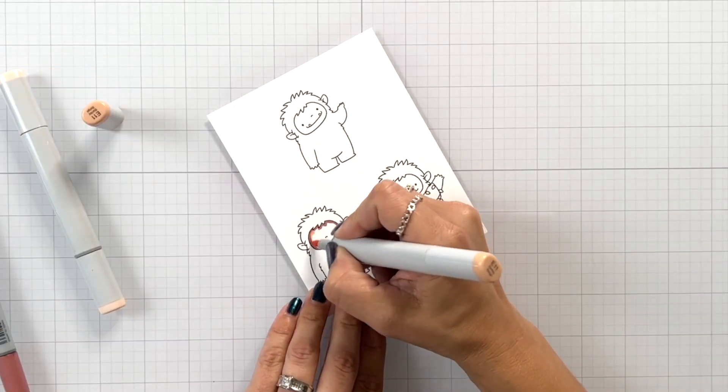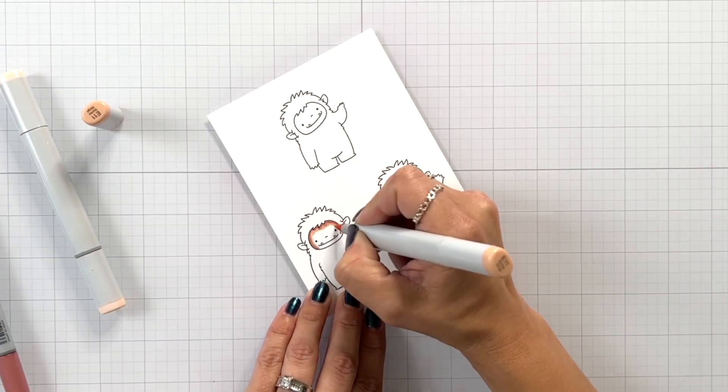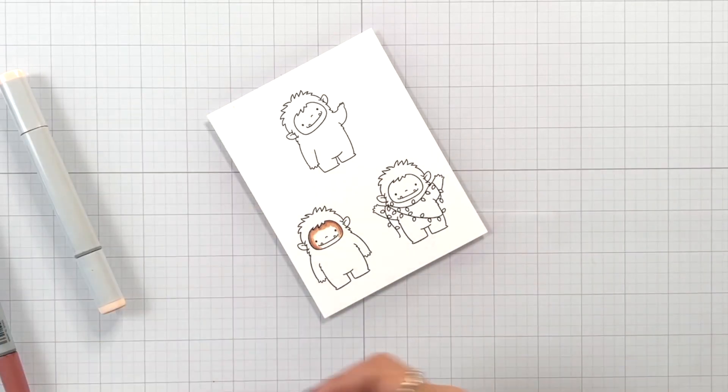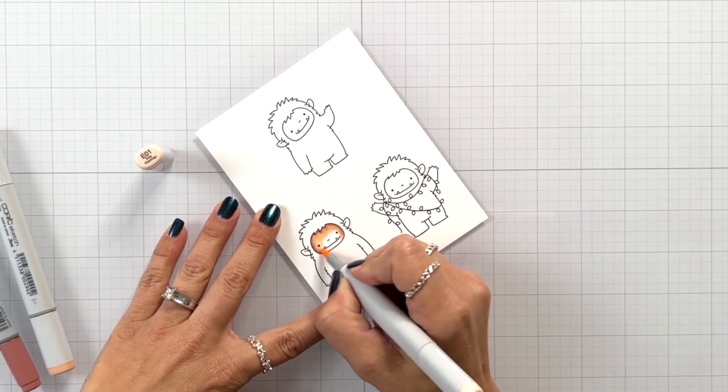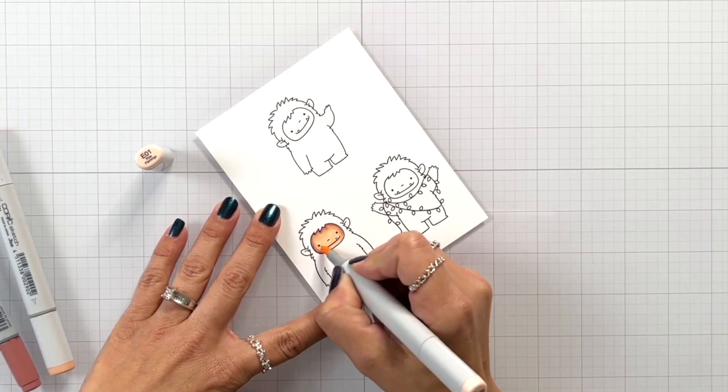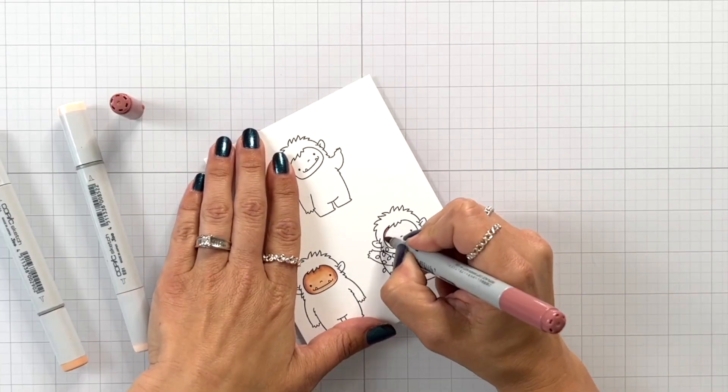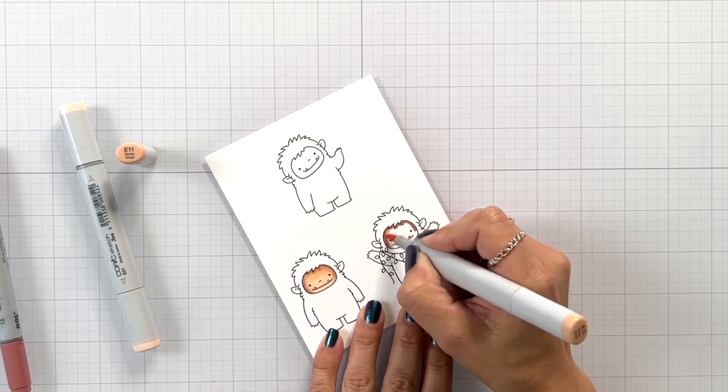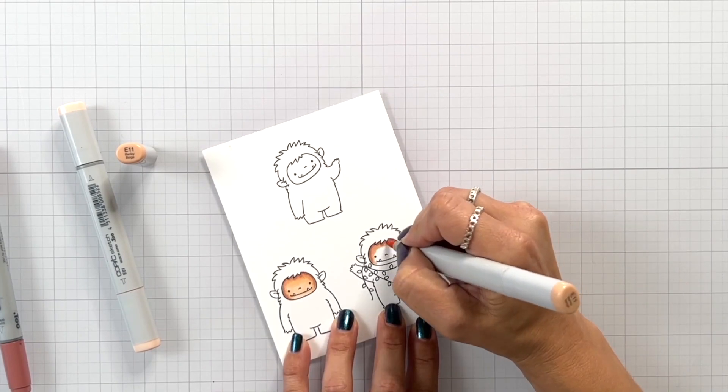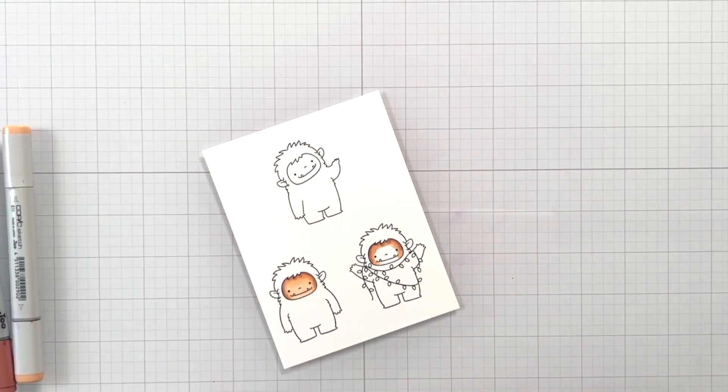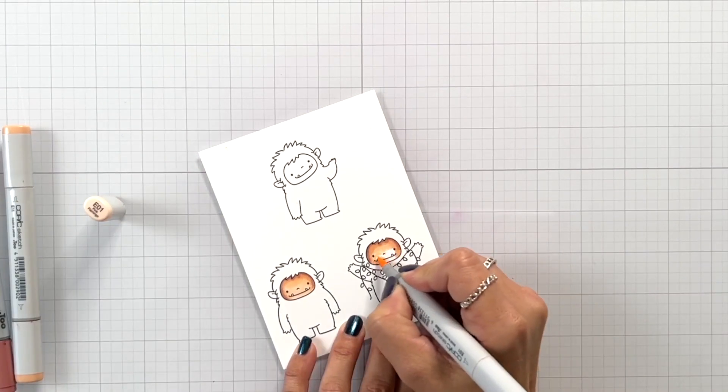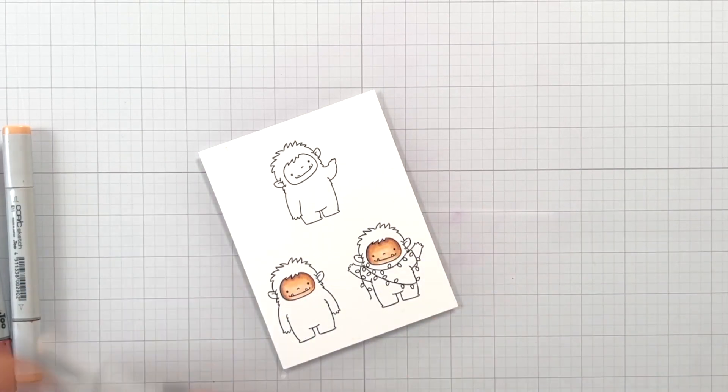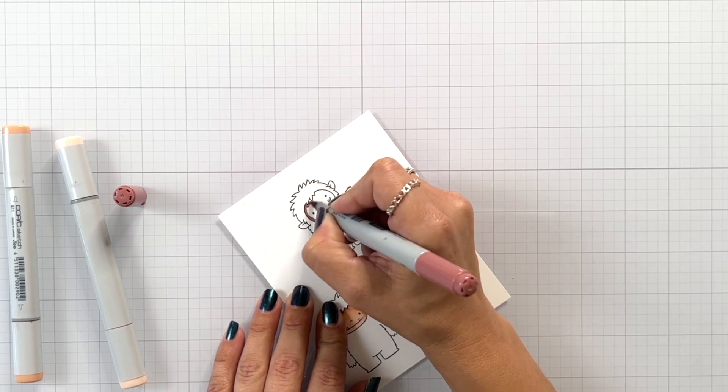I'm coloring the images today with my Copic markers, starting with an E04, E11, and E01. I'm going to use these same three color combinations for all three of the faces. Now I used that E04, which is my darkest color, and I added it right under that hairline and then I just went a little bit on the side of the face and then blended out with the remaining colors.